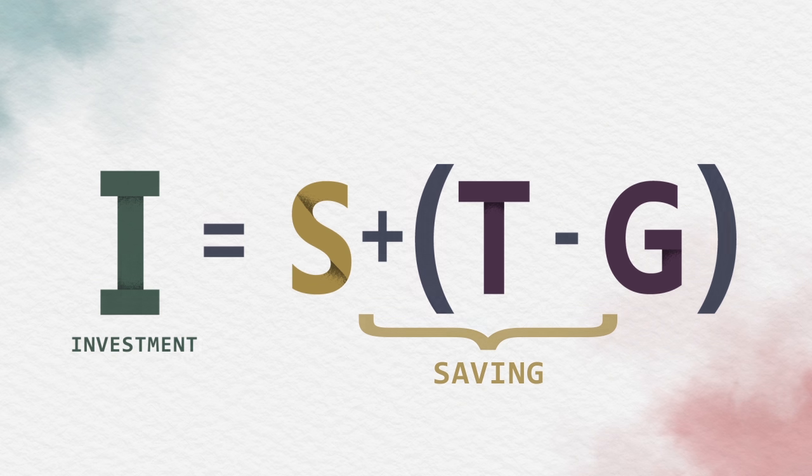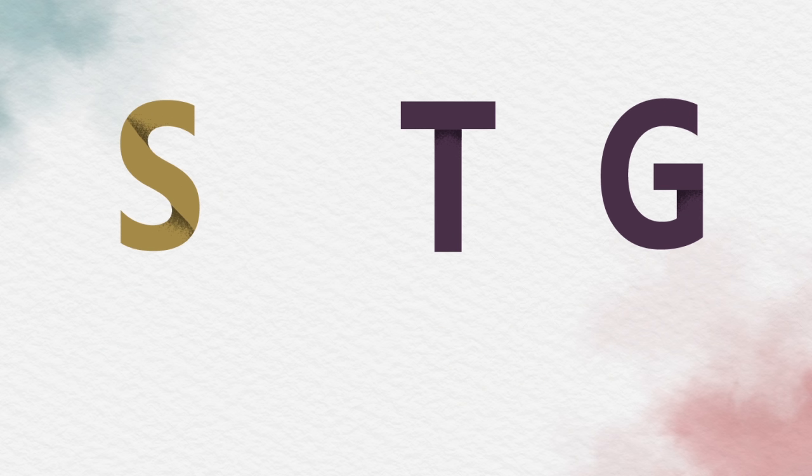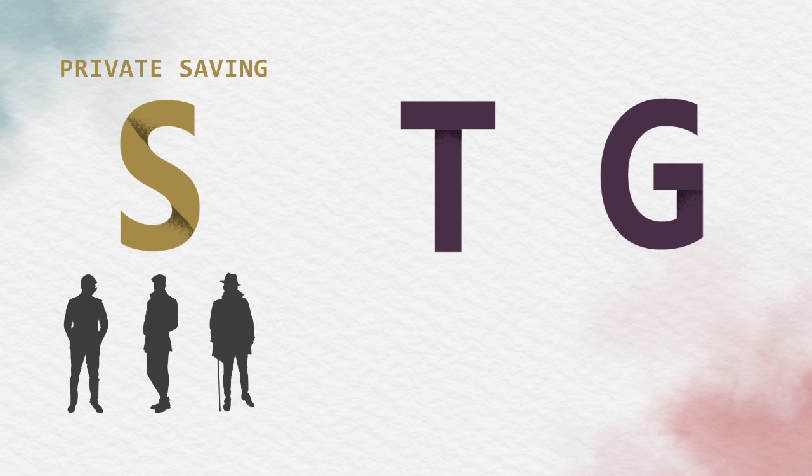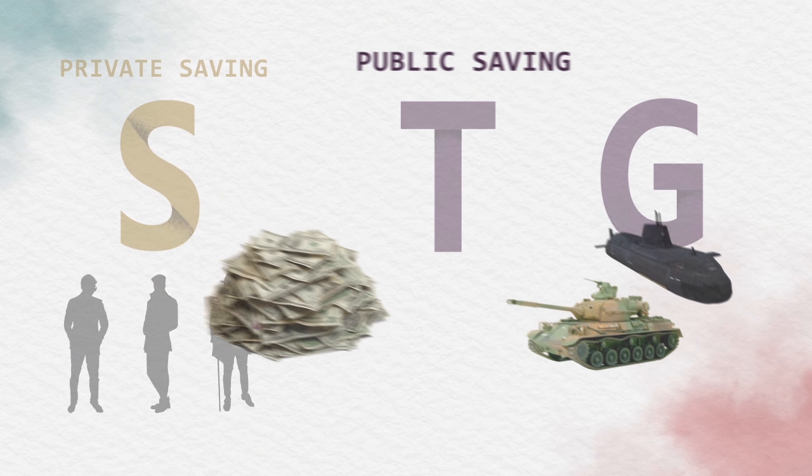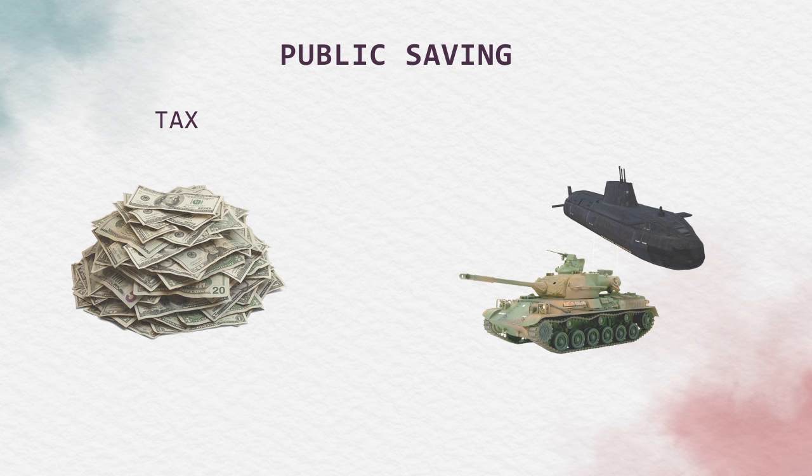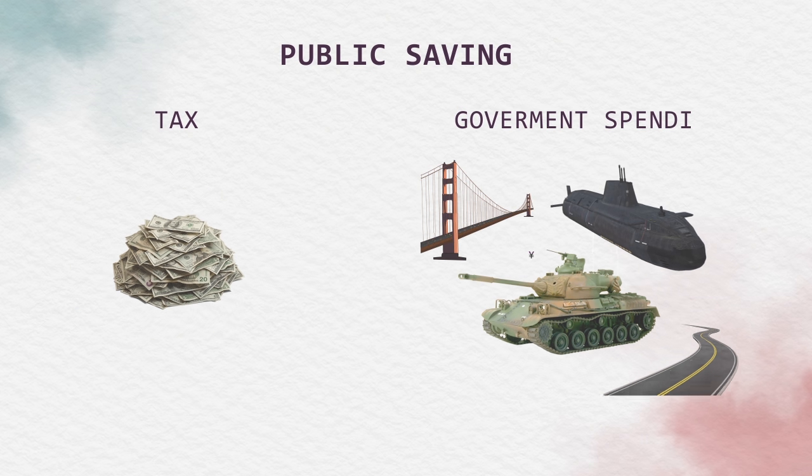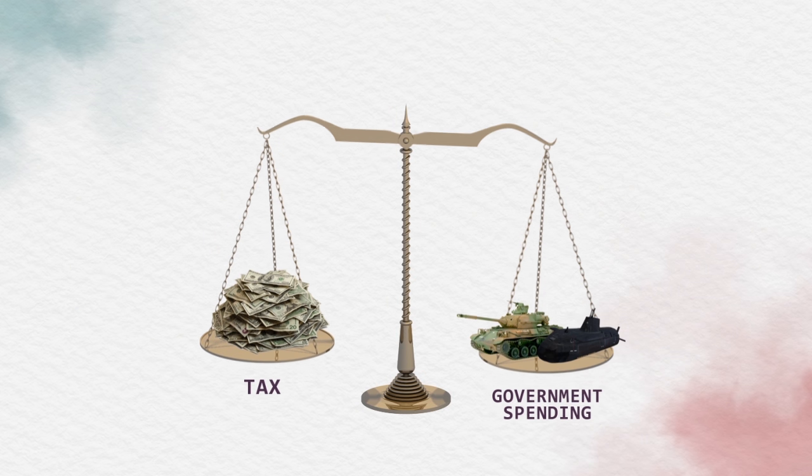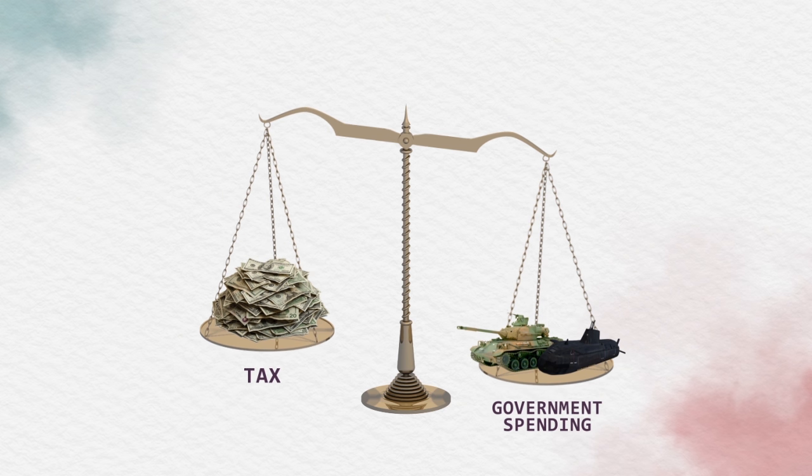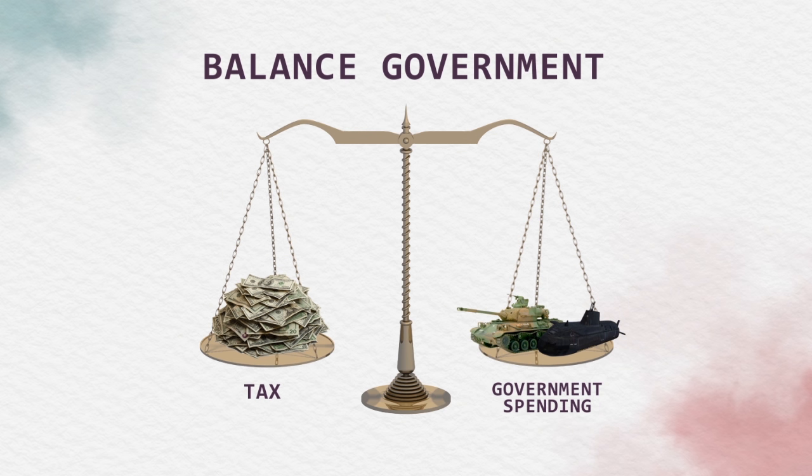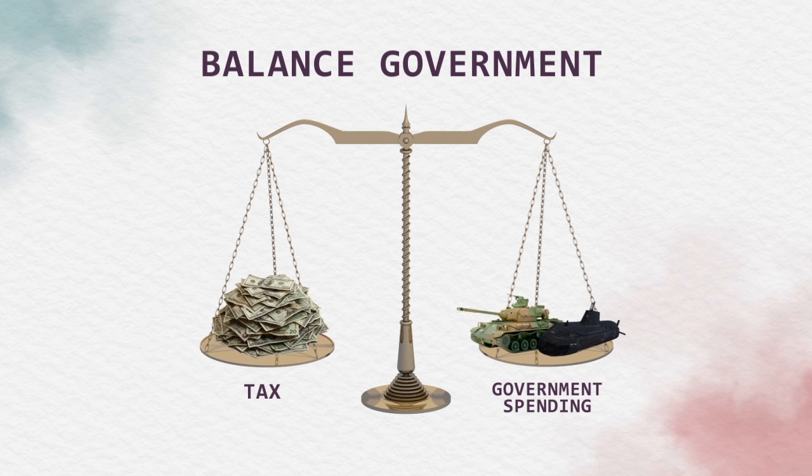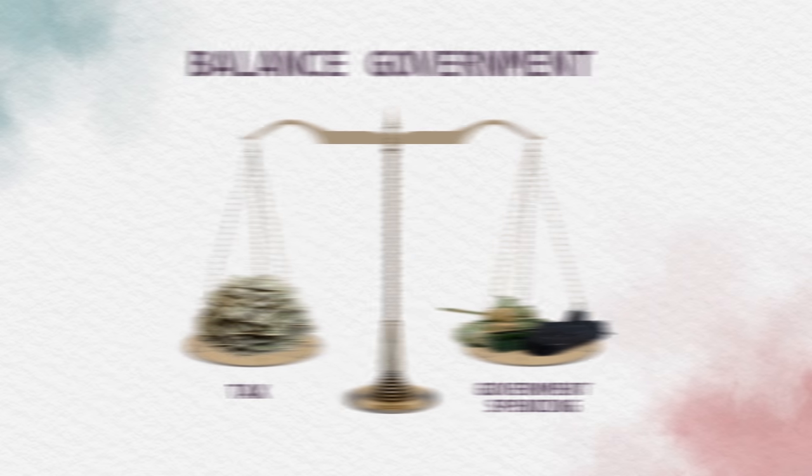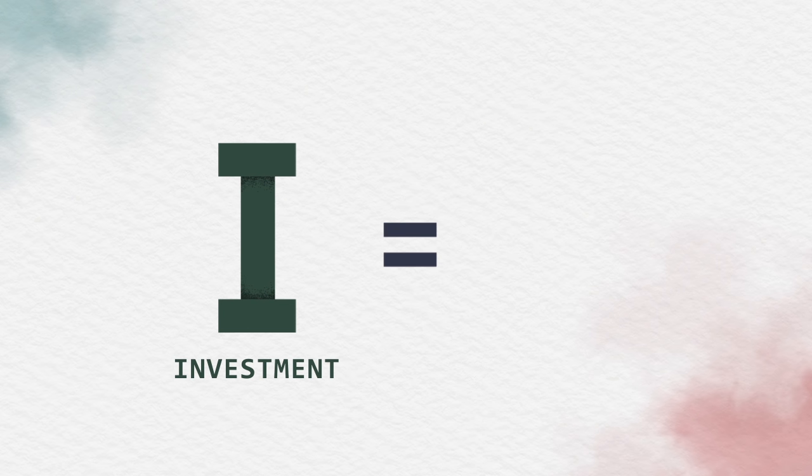According to savings, we can separate into two categories: the first one is private saving and the second one is public savings. Public savings come from tax subtracted by government spending. Then we assume that we have a balanced government budget, which means G (government spending) is equal to T (tax). So we get investment equal to savings.